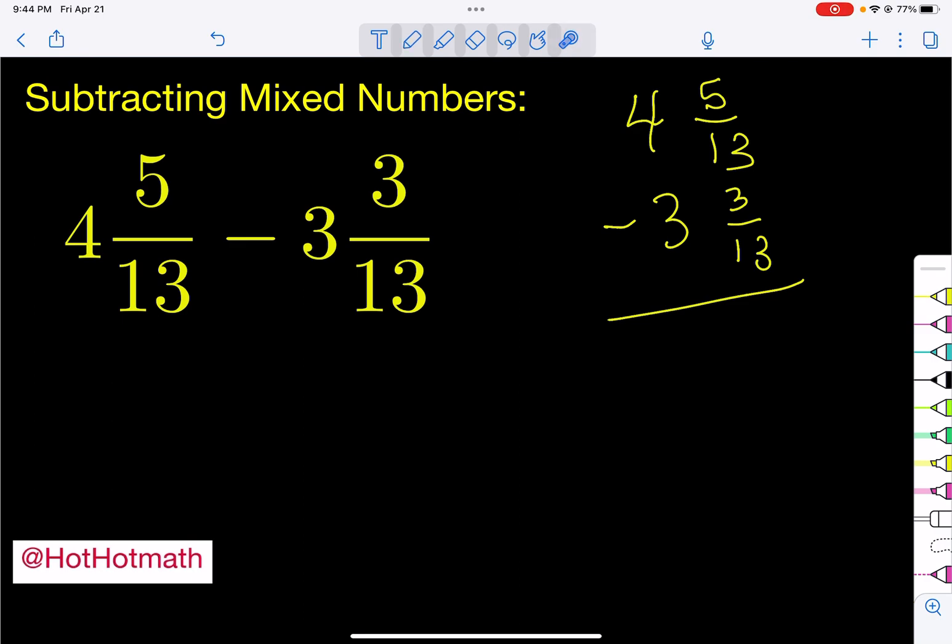Now that that's all fixed and we've checked all that out, we're just going to subtract the whole number pieces. 4 minus 3 is 1. And we're going to subtract the fractional pieces. Now remember how you subtract fractions. We are going to keep the bottom, so we already know that the bottom will have a 13 in it. And we are going to subtract the tops. 5 minus 3 is 2.